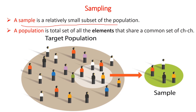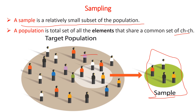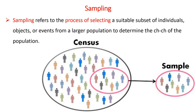Starting from the definitions of sampling: a sample is just a relatively small subset of the population — a small subset of manageable populations. A population is a total set of all the elements that share a common set of characteristics. A sample drawn from a population has the common characteristics of the population, so based on the findings of the sample we can conclude or generalize about the population.